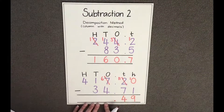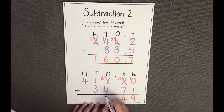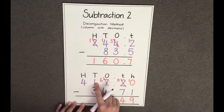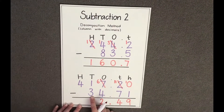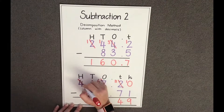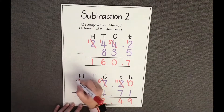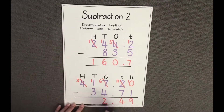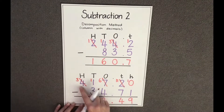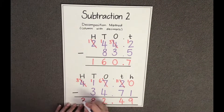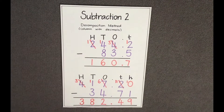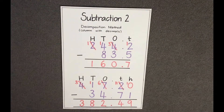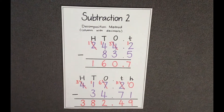Now I'm going to subtract my ones: six ones take away four ones equals two ones. One ten take away three tens — I do not have enough tens to take away three, so I have to borrow from my hundreds. I'm going to take one hundred from the hundreds column, which leaves the hundreds with three hundreds. Now I have eleven tens take away three tens, which gives me eight tens, and three hundreds take away no hundreds is three hundred. Therefore, the answer to four hundred and seventeen point two take away thirty four point seven one equals three hundred and eighty two point four nine.